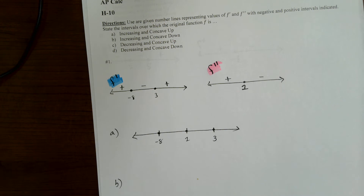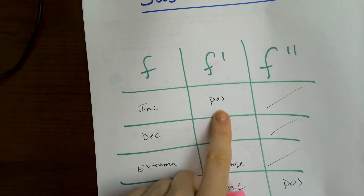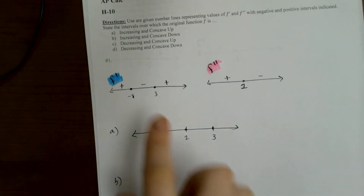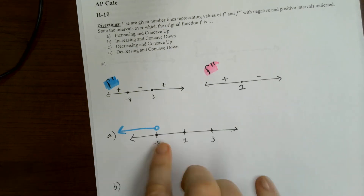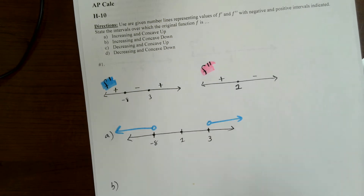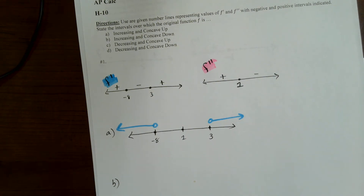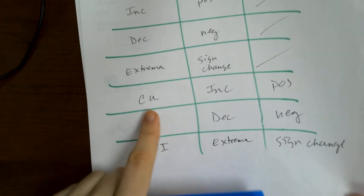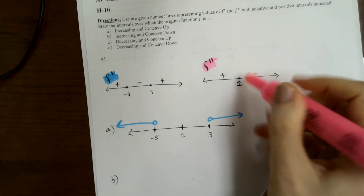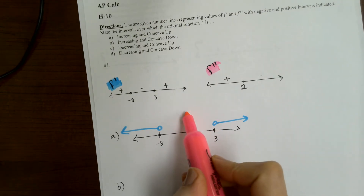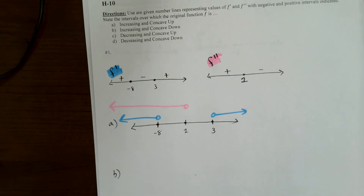Okay, so first they want increasing and concave up. Well, increasing — F prime is what tells us about F increasing. So F increasing corresponds to F prime positive. So I want the intervals where F prime is positive — that's everything to the left of negative eight and everything to the right of three. On those intervals, F is increasing. Now I want F to be concave up. Concave up happens when F double prime is positive, and that is happening for everything to the left of one.